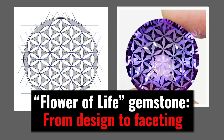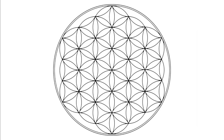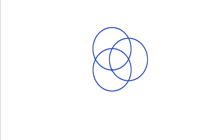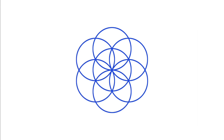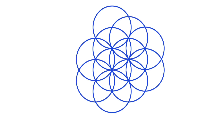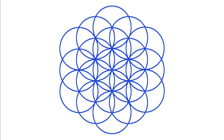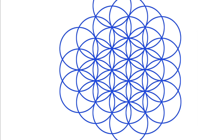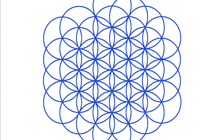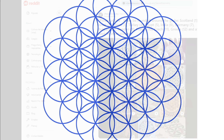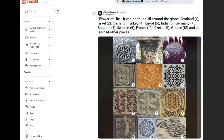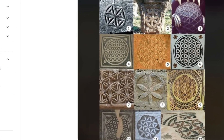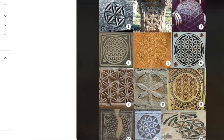Hey guys, in this video I'm going to show you the process of designing and faceting of the famous Flower of Life pattern. The Flower of Life is an ancient geometric symbol that has been found in various cultures throughout history. It consists of multiple evenly spaced overlapping circles arranged in a hexagonal pattern, forming a symmetrical and harmonious design. This symbol has been widely recognized for its intricate beauty and deep historical significance.